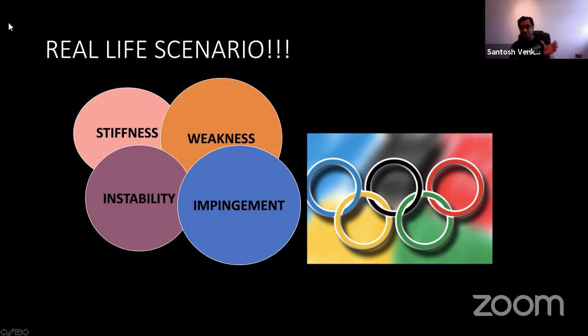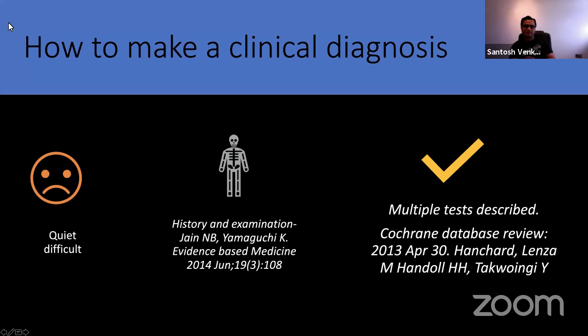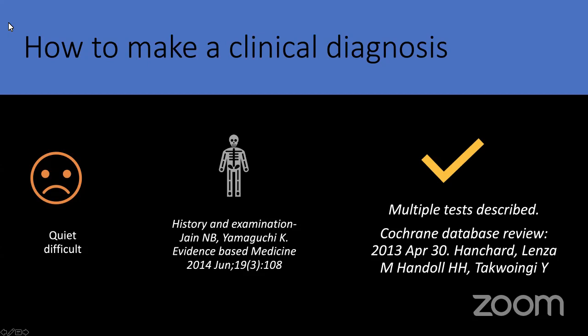In the next few slides we'll talk about how to deal with a stiff shoulder and identify the pathology. There are useful hints — basic medical school history taking, examination, and investigation. The challenge with shoulders is it's not easy to make a clinical diagnosis based on history and examination alone. If you look at literature, there are more than 300 to 350 tests described to diagnose a shoulder problem, which suggests that none of them are very sensitive or specific.